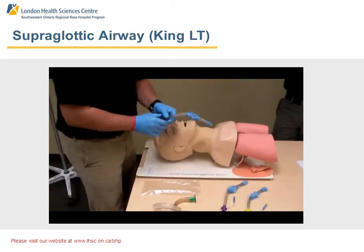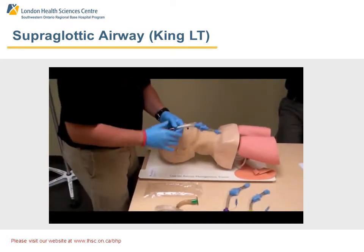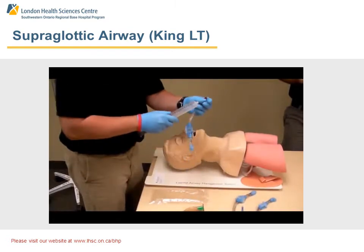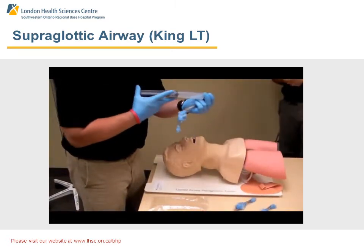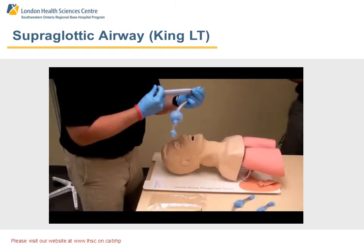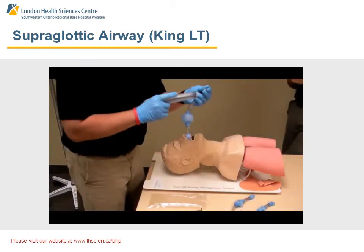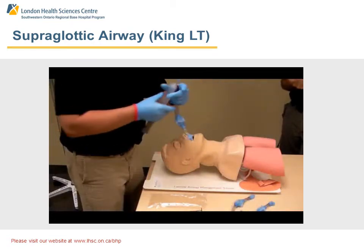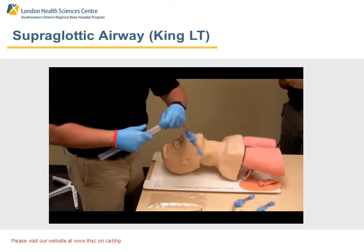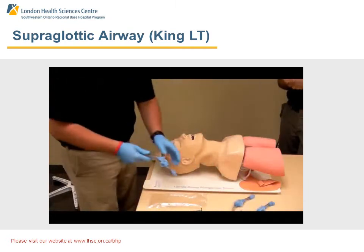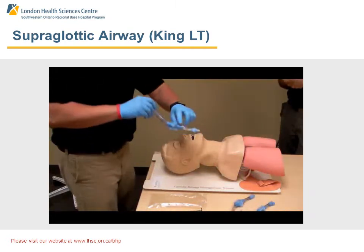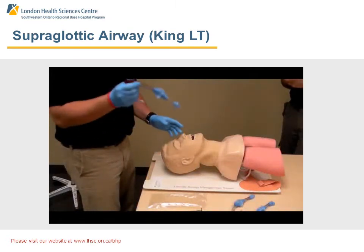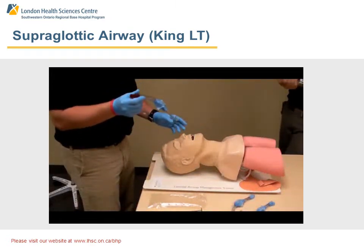When assessing for the King, make sure no contraindications are present. First, take your syringe that comes with the King and check the cuffs by inflating to confirm good cuff integrity. Then take your airway lubricant, put it onto the packaging, and lubricate the King on the opposite side of the aperture before placement.